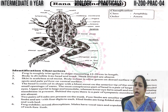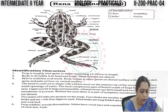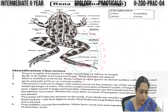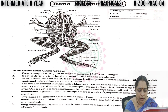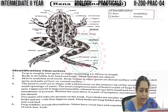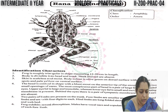Let us see the important identification characters of the frog. The frog is roughly triangular in shape, measuring 12 to 20 centimeters in length. The body is divisible into head and trunk only — neck and tail are absent in amphibians. The skin is scaleless and moist. Body color is olive green on the dorsal surface with irregular dark spots, and pale yellow on the ventral surface. The head is conical in shape with a blunt snout on the anterior tip, and two small openings of external nostrils.